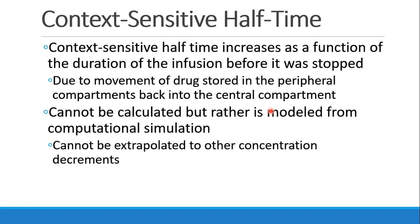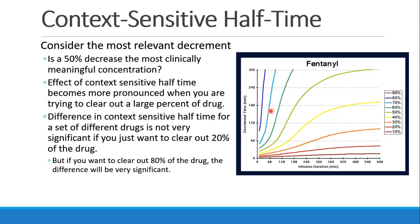You can't extrapolate context-sensitive halftime to other concentration decrements either, so this is really something you need to look up in a book. It's good to know how long it takes for plasma concentration to drop by 50%, but is that clinically meaningful? It might be that you need the concentration to drop not by 50%, but by 70% or by 90% — for instance, to correspond with the patient waking up.